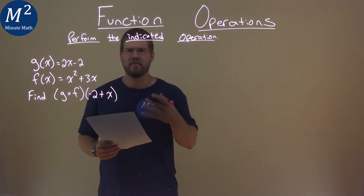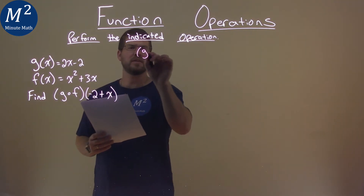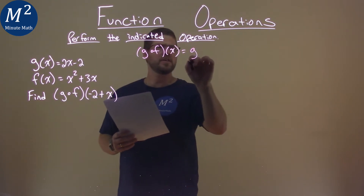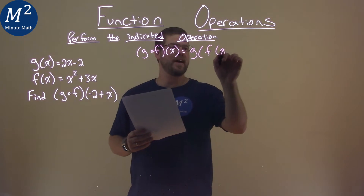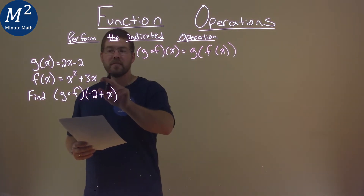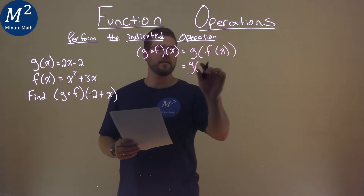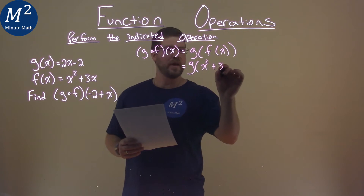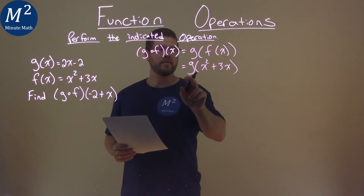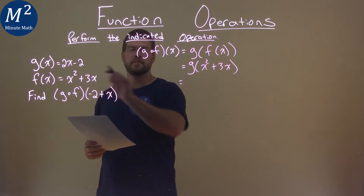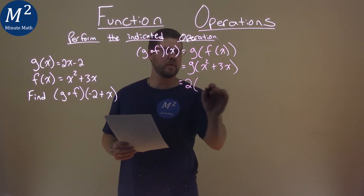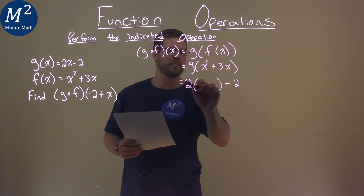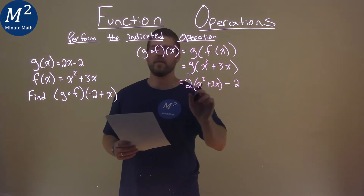We'll first find g of f of x. G of f of x is g of f of x. We were given f of x, so it's pretty easy. We plug that in here. So instead of f of x, we put x squared plus 3x. Then we're given g, so we take our function g, which is 2x minus 2. But instead of an x, I'm going to put parentheses, and then minus a 2. I'm going to put what we have right here of x squared plus 3x, for what the x value should be.